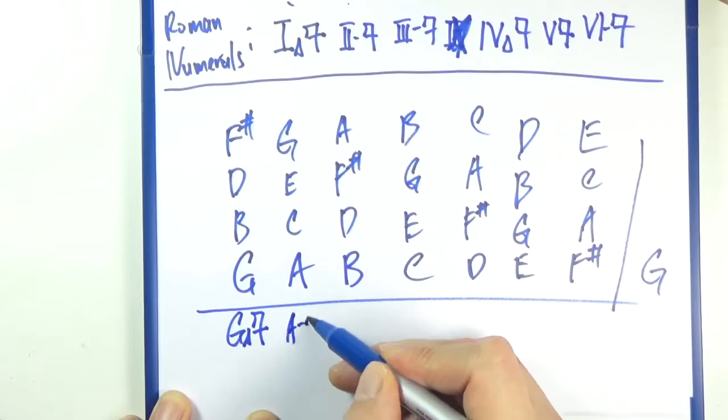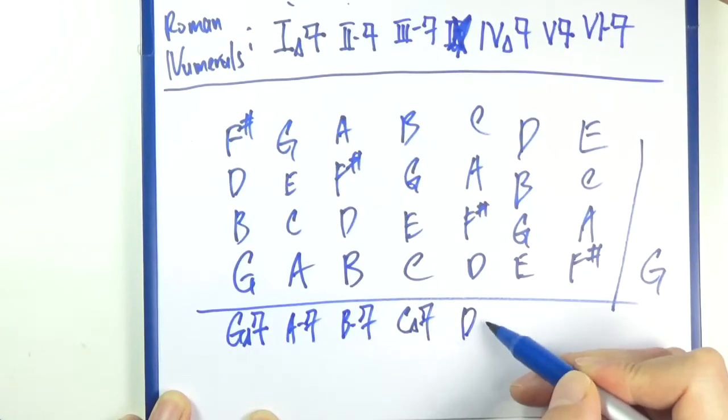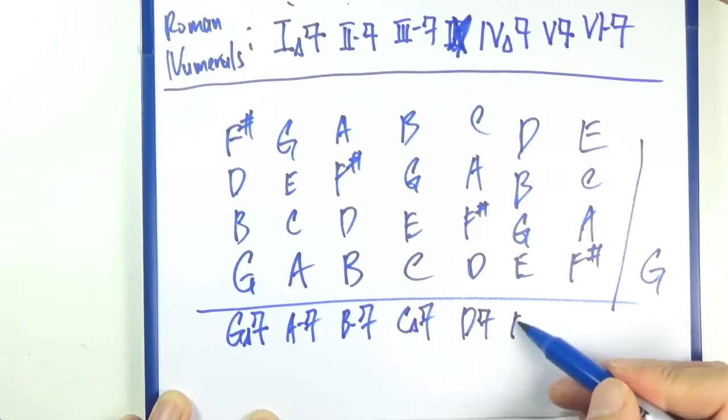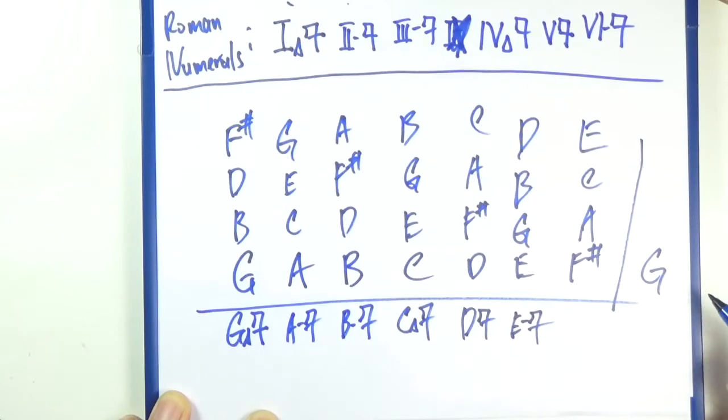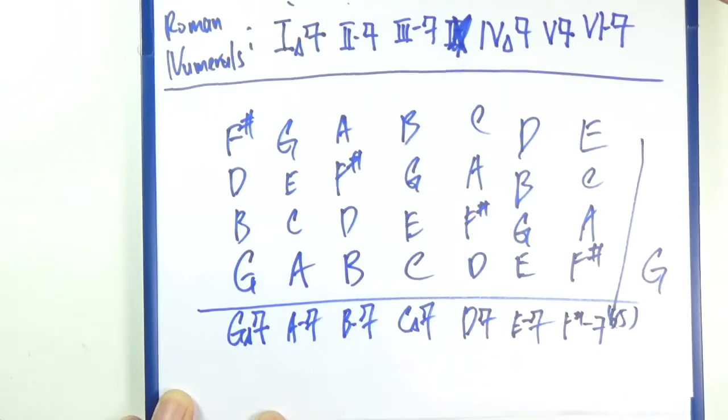That should be A minor seven, B minor seven, C major seven, D dominant seventh, E minor seven, and that should be F sharp minor seven flat five.